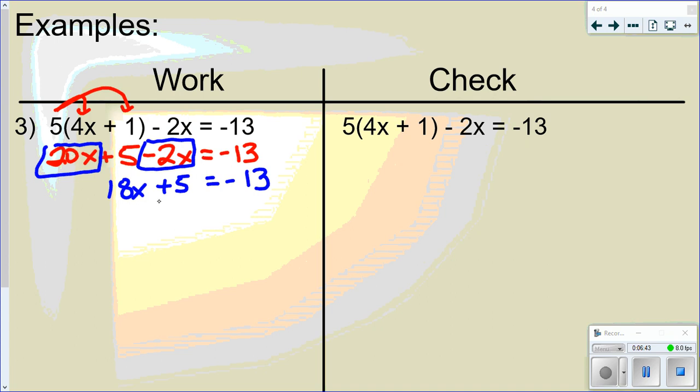And now at this point, I have a two-step equation. So I see plus 5. So I'm going to do minus 5. Let me put my line down the middle here. So I'm doing opposite operations to get the variable by itself. 5 minus 5 is 0. Bring down my 18x. Negative 13 minus 5 is negative 18. I have 18 times x. So I'm going to do the opposite and divide by 18. So x equals negative 1.